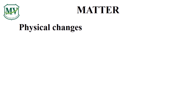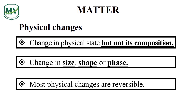Matter undergoes changes — it can be a physical or a chemical change. Physical change does not change the chemical composition of matter. It may change its size and shape, and most physical changes are reversible. For example, water freezes at extreme cold temperature, but ice, which is frozen water, may melt again when heat is applied. The chemical composition of water was not changed, only its physical appearance.